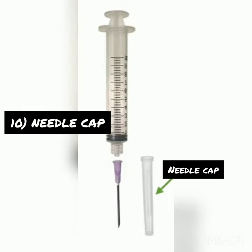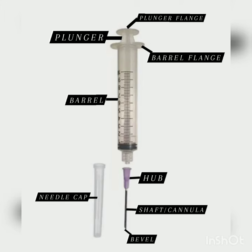Needle cap: the covering of the needle is called the needle cap. It is a hard plastic cap that covers the needle shaft and tip until the moment of use. The cap is the only place where you can aseptically touch or hold the needle.